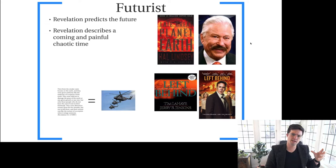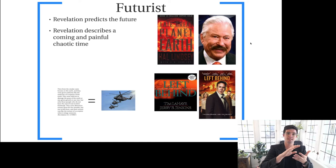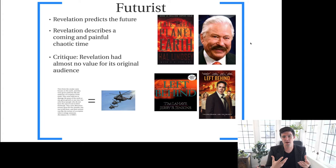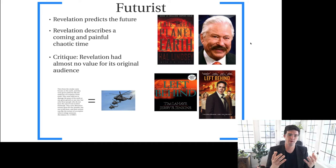One emphasis of the futurist approach is that Revelation is describing a time that is particularly painful and chaotic, and there's a sense in which that is accurate — it really gets at the suffering inherent to Revelation. But it sees that pain and suffering not as an aspect of John's time but of a time yet to come. The major critique is that Revelation would have had almost no value for its original audience — the seven churches — who are sort of there just as historical placeholders, with no sense that Revelation is relevant to them because these things aren't going to happen in their time.